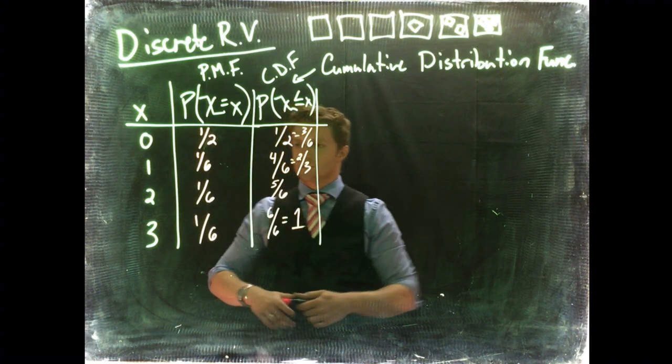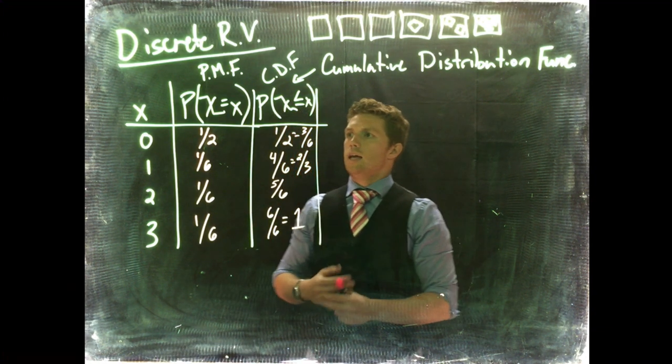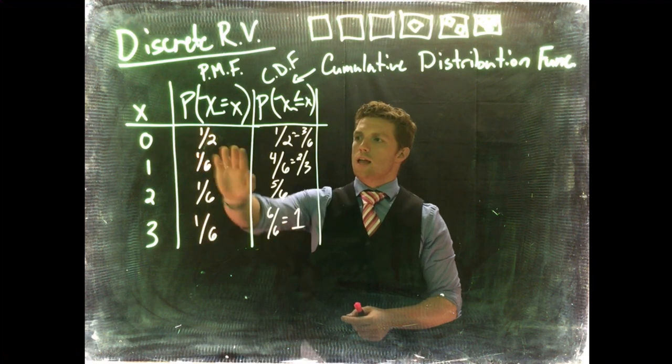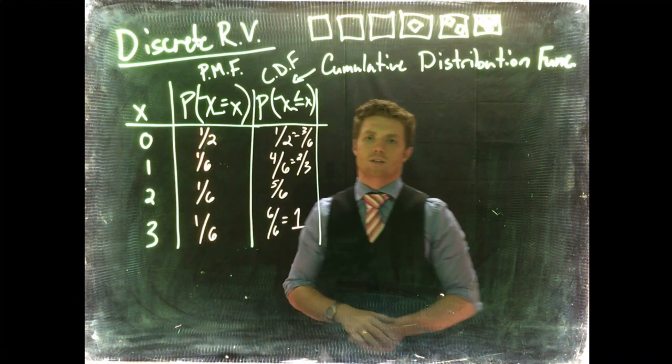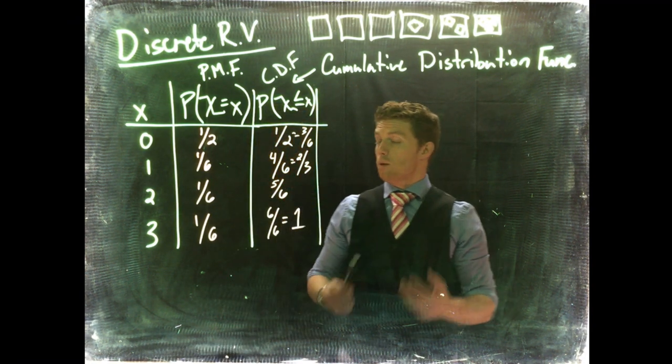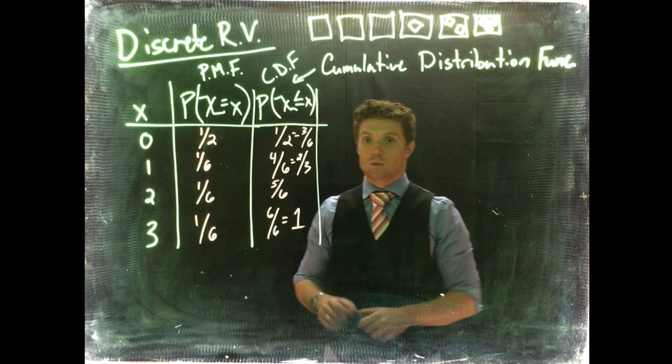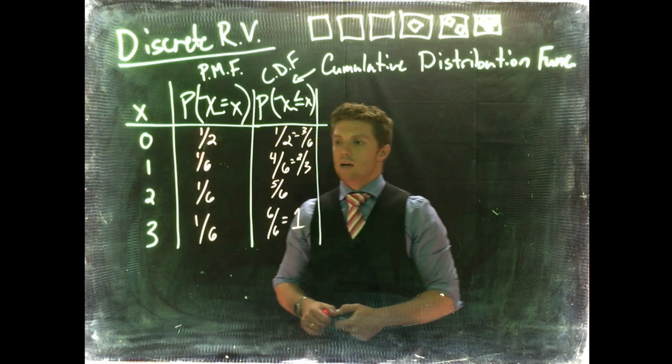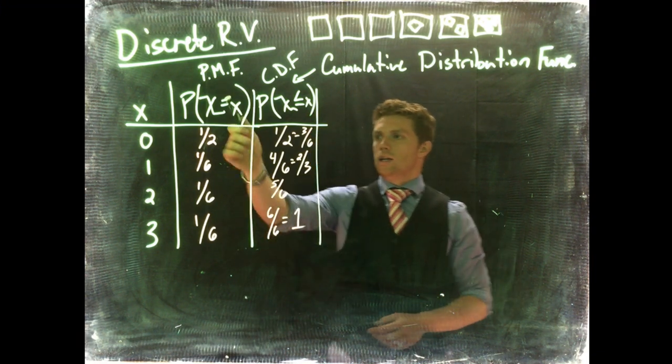So some other concepts here is that our probability mass function, every single outcome must have an associated probability. It can be anywhere between zero and one, because any probability can be between zero and one inclusive. It can't be more than one, it can't be less than one in our PMF.